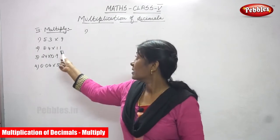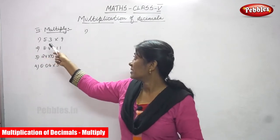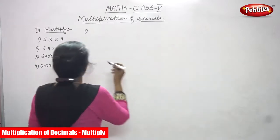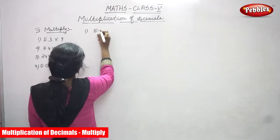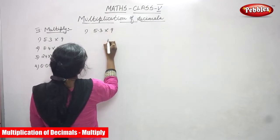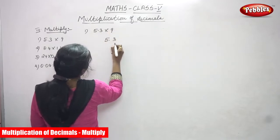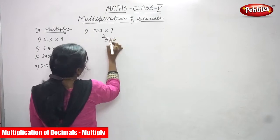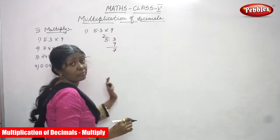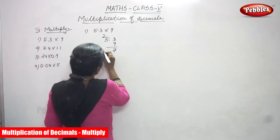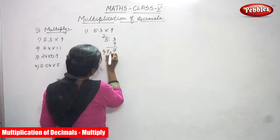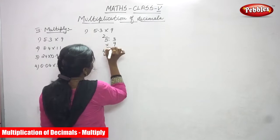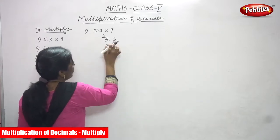The third topic is multiplication. The first sum is 5.3 into 9. So 9 threes are 27, write 7 carry 2. Then 9 fives are 45, plus 2 is 47. So the answer is 47.7.